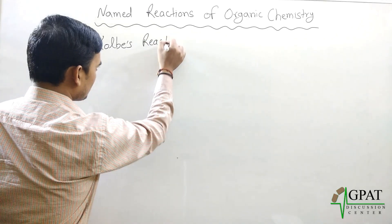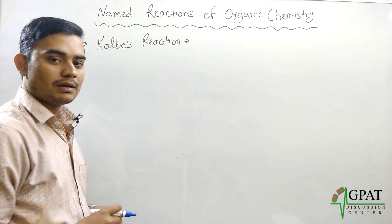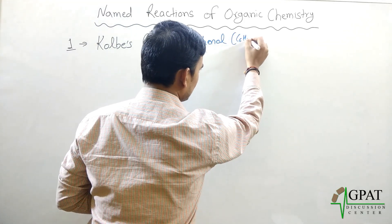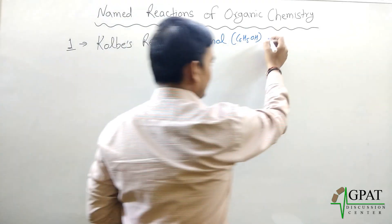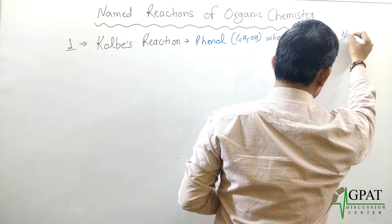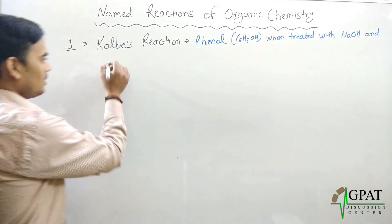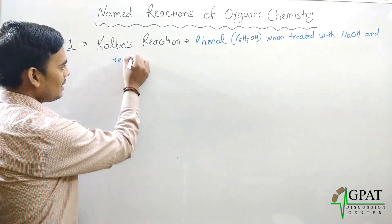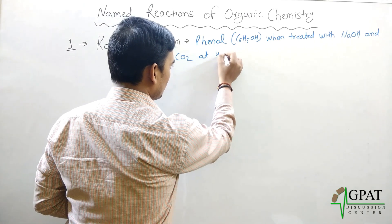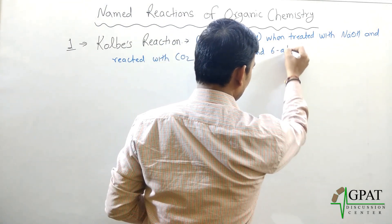The first named reaction will be Kolb's reaction. In Kolb's reaction, when phenol (C₆H₅OH) is treated with a base — sodium hydroxide — and reacted with carbon dioxide at 400 degrees Kelvin temperature and 6 atmospheric pressure,